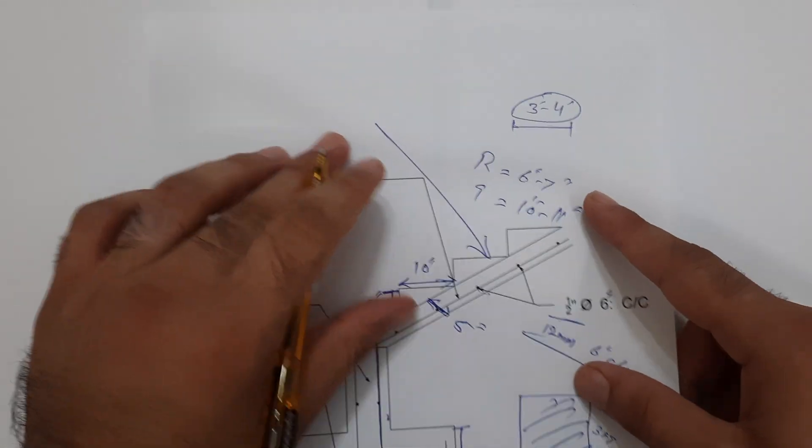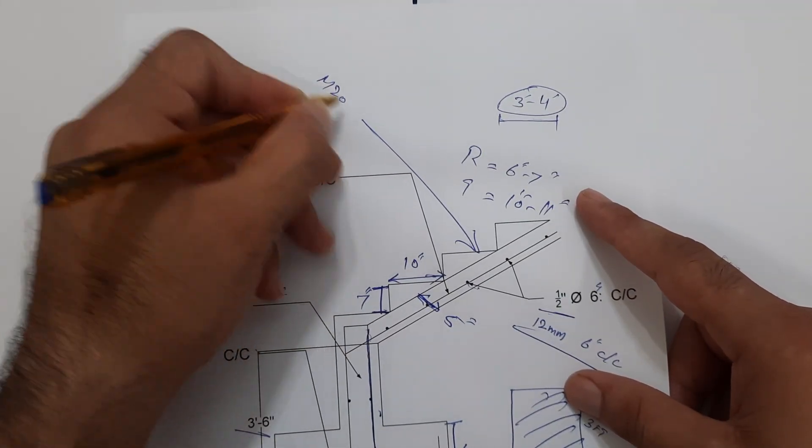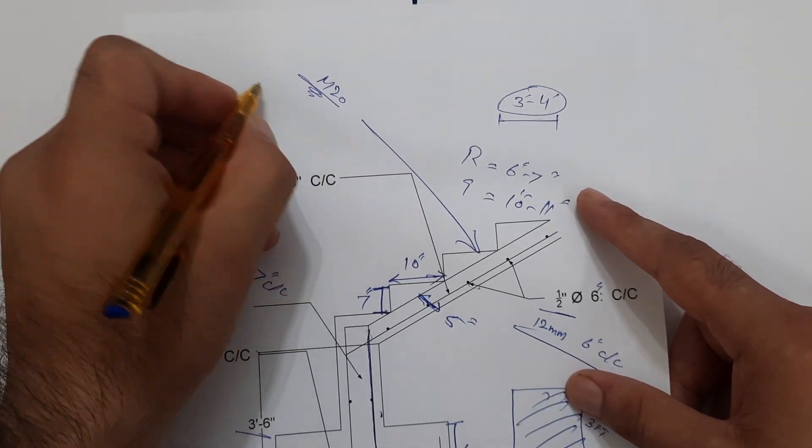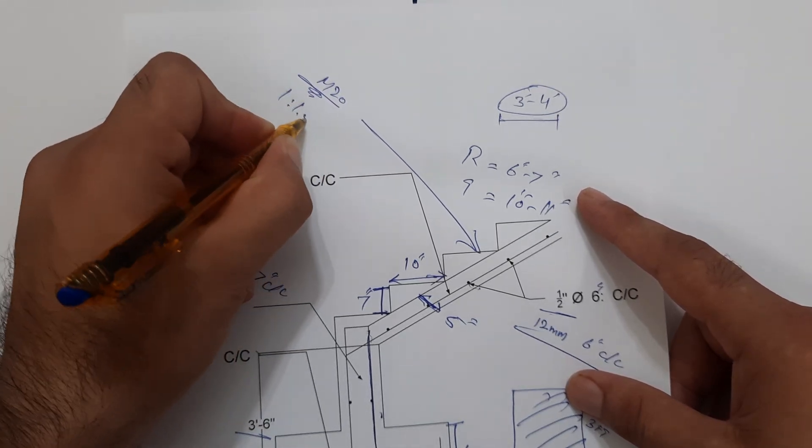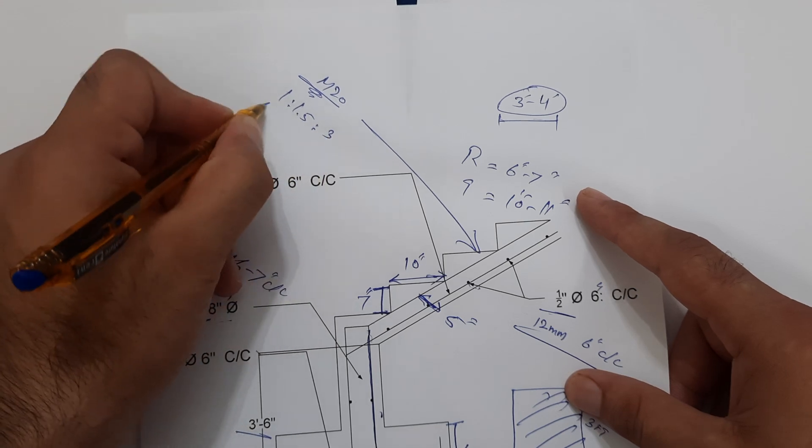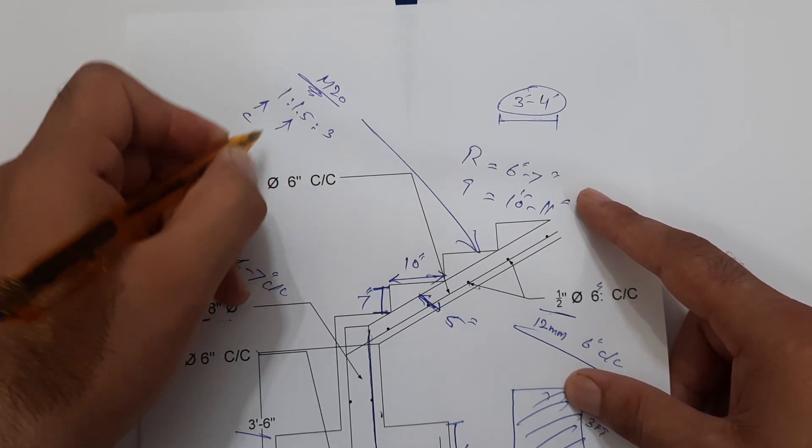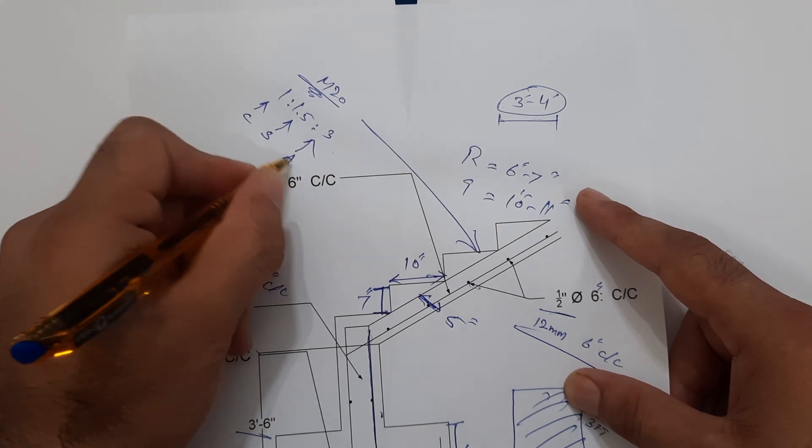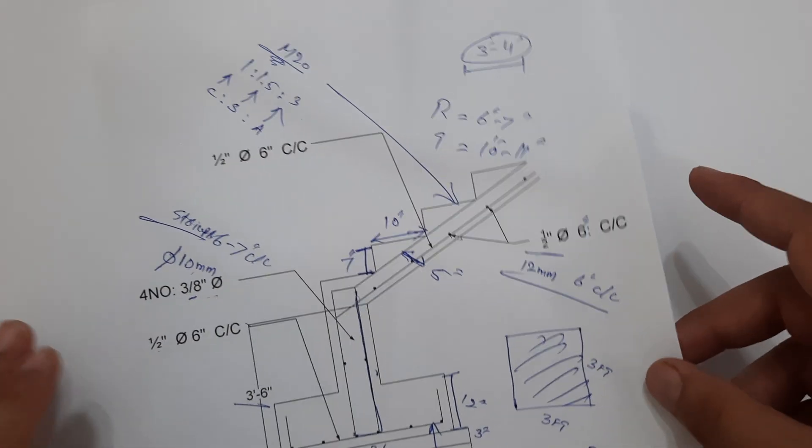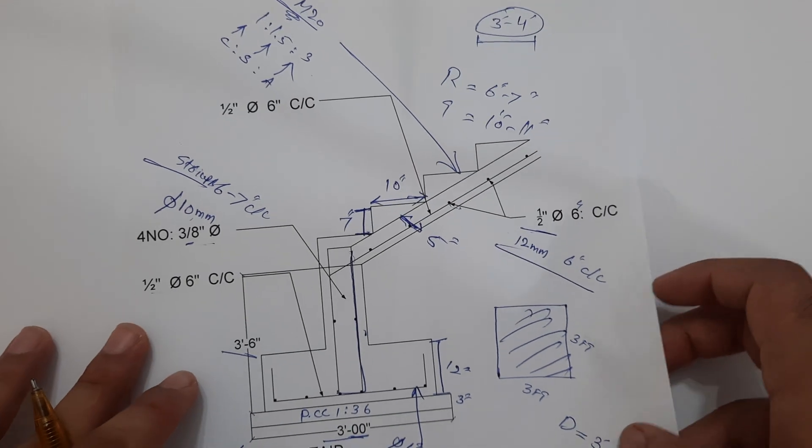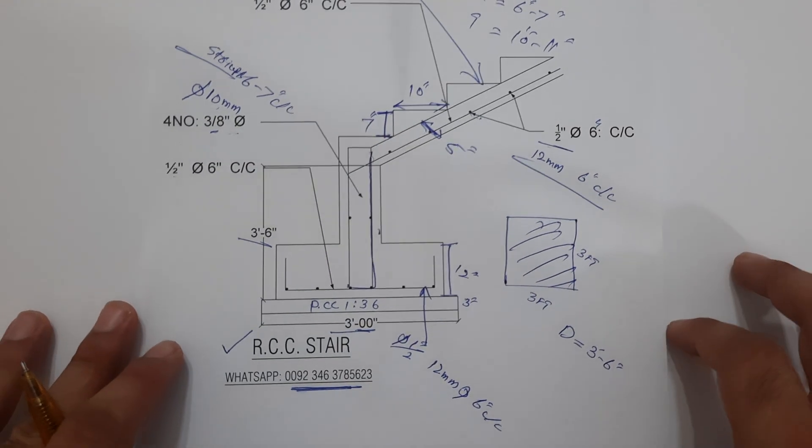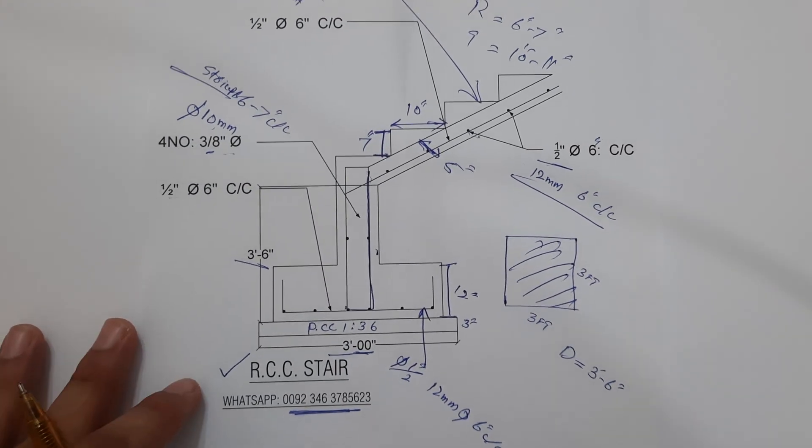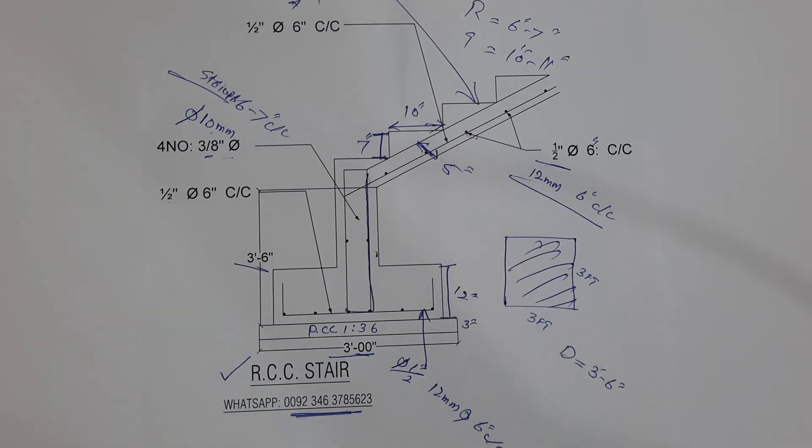And use here for this stair construction use M20 grade concrete, okay, which ratio is one ratio 1.5 ratio 3. One part cement and 1.5 part sand and three parts aggregate or crush, okay. So guys, this is the very important topic about steel reinforcement and the construction of RCC stair. Thanks for watching, see you in next video, goodbye.